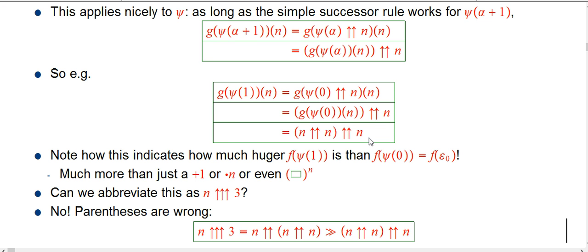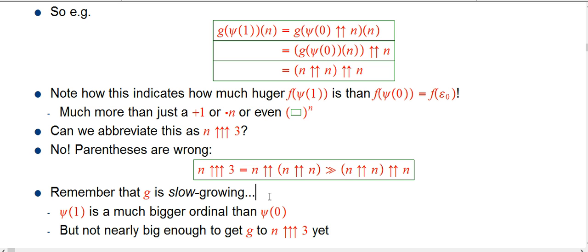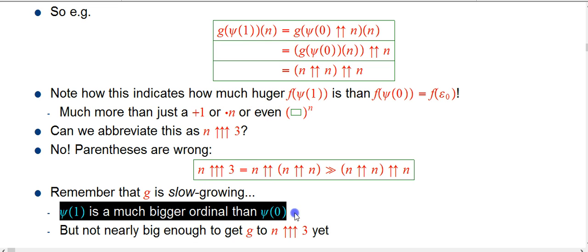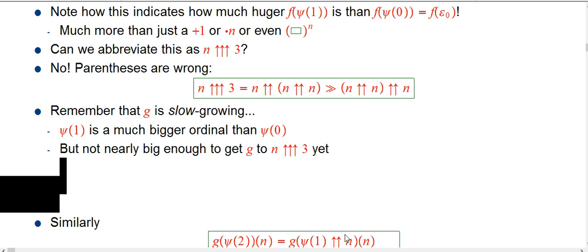We don't want to overestimate how big g is here. It's a significant increase over just n double-up n, and by any pedestrian standards — take 4 double-up 4 and then double-up that by 4 — it's going to seem like a big number, a much bigger number. But it's not triple-up. Remember, g is a slow-growing function. There's a reason it's called the slow-growing hierarchy — it's really reluctant to participate in the kinds of leaps the fast-growing hierarchy has access to; it's just not designed to do that. So psi of 1 is a much bigger ordinal than psi of 0, but it's not so enormously big as to get this very reluctant function g up to the n triple-up 3 level, much less n triple-up n.